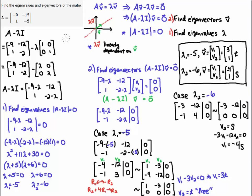So the eigenvectors and eigenvalues of this matrix are: lambda 1 equals minus 5 is the first eigenvalue, with associated eigenvector [3, 1]. The second eigenvalue is minus 6, with associated eigenvector [minus 4, 1]. Keep in mind that these eigenvectors can be scaled by any scalar multiple, but typically we enter our answers as lambda 1 equals minus 5 with eigenvector [3, 1], and lambda 2 equals minus 6 with eigenvector [minus 4, 1]. Alright, good luck!